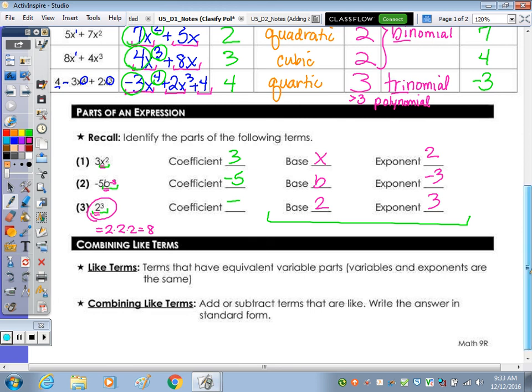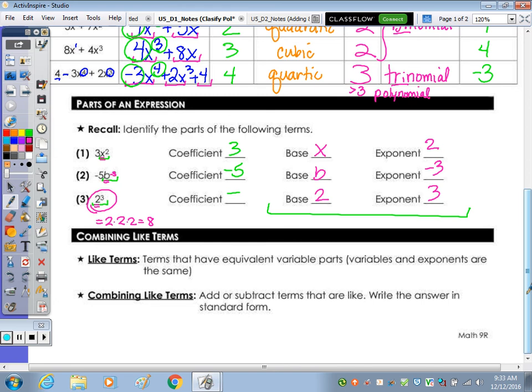And now, we're going to finish by combining like terms. So before we do that on the back, looking at the vocab, like terms are terms that have equivalent variable parts. Variables and exponents are the same. So let's underline that. Combining like terms means to add or subtract the terms that are like, combining like terms.